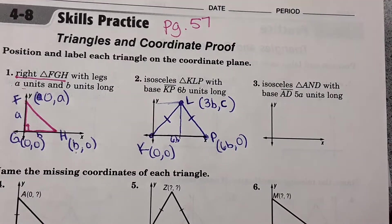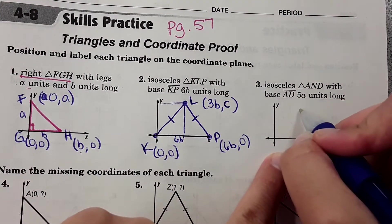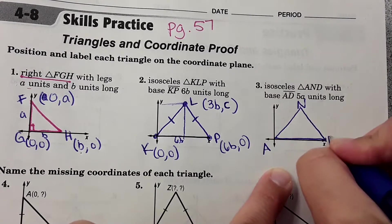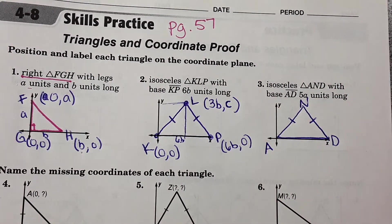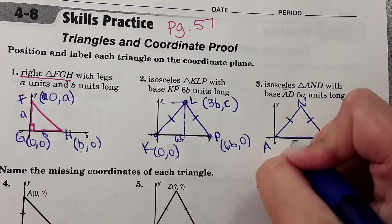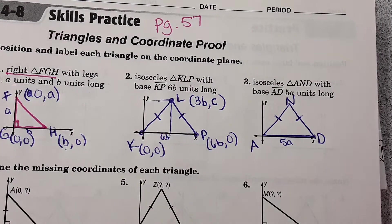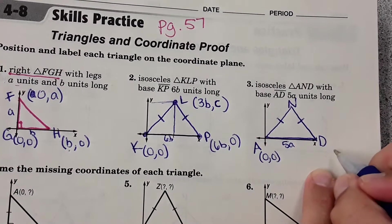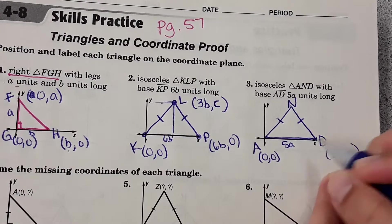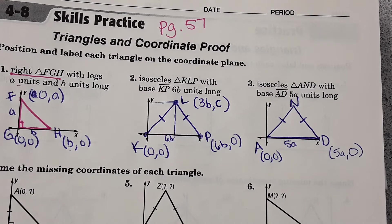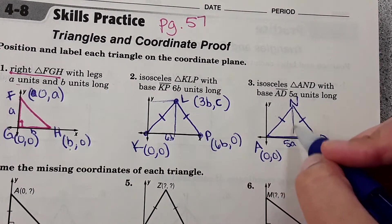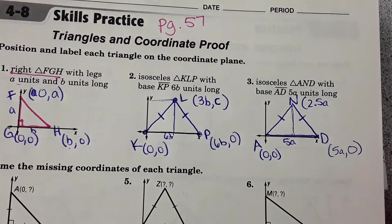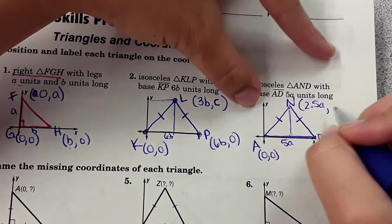Okay, the next one is just like number two, so it gives us an opportunity to practice the same thing again. Isosceles triangle AND. It says base AD is five A units long. Point A is at zero zero, the origin. Point D is going to be over five A and then up zero because it's just on the axis. And then point N is at the halfway point here, so the X would be half of five, which would be two point five A. And then the height we don't know, we'll choose the next letter in the alphabet, which is B.